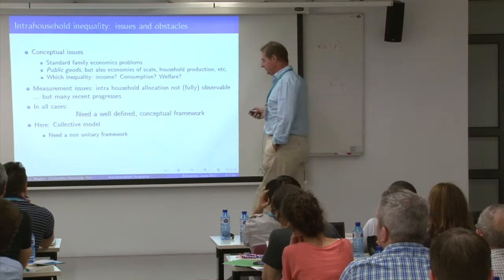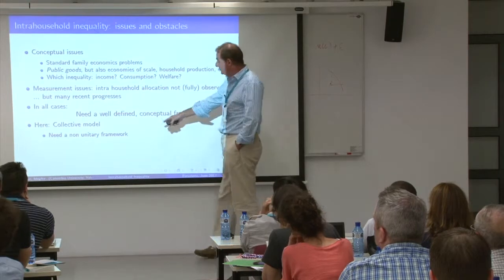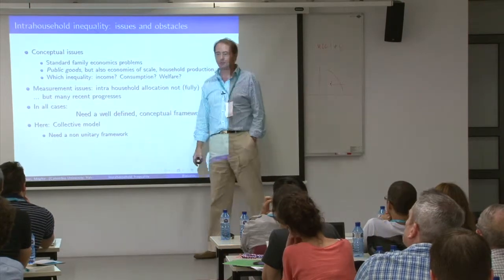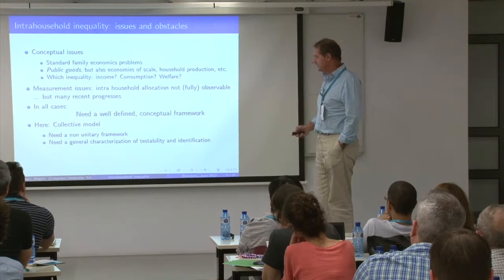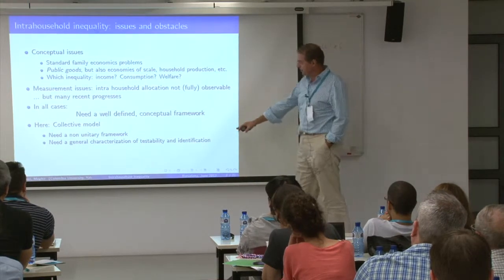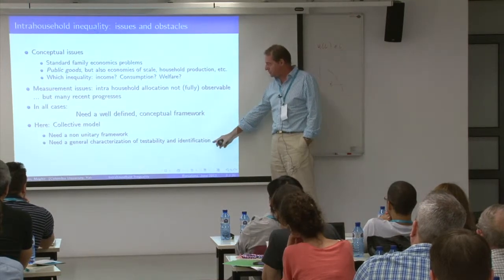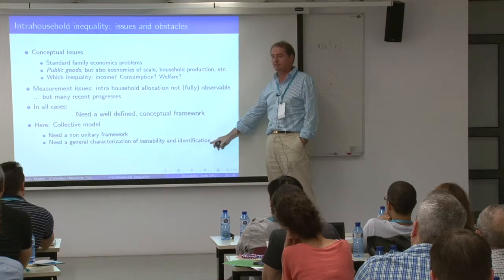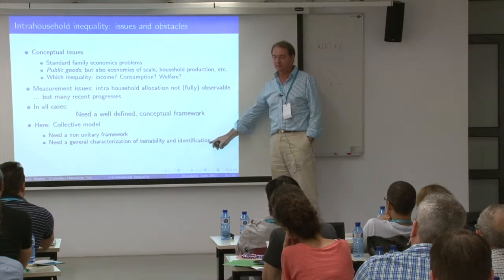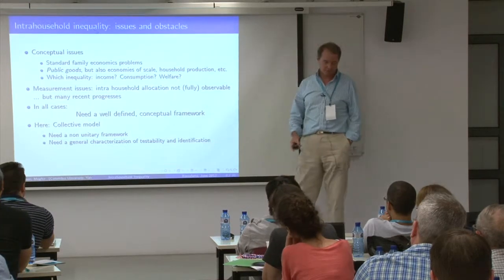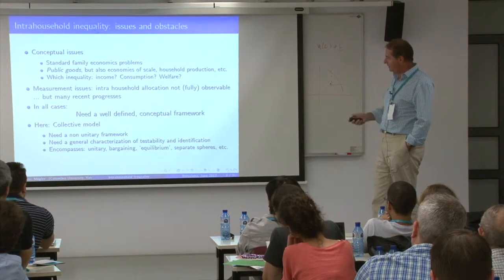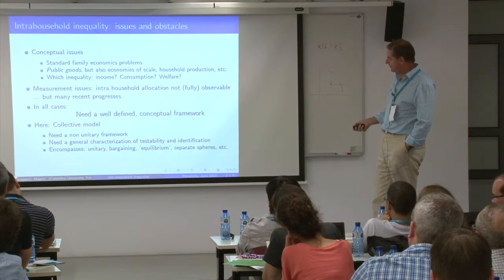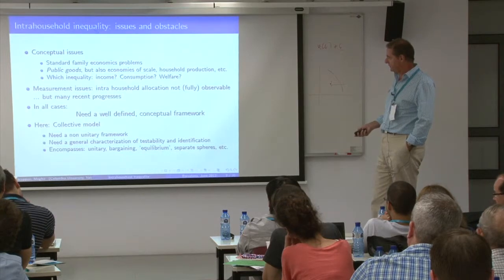I'm going to use a collective model. We need a non-unitary framework — it's very hard to talk about inequality of welfare if you have only one utility function. We need a model with a general characterization of what can be identified under which assumption, which we have in the collective model. The collective encompasses the unitary as a particular case, bargaining equilibrium, separate spheres, and so on.